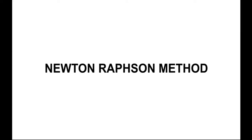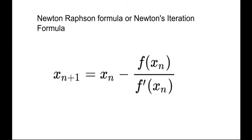In this video, we will see some examples based on the third numerical method which is the Newton-Raphson method. This is the Newton-Raphson formula or Newton's iteration formula: x(n+1) is equal to x(n) minus f of x(n) upon f dash of x(n).